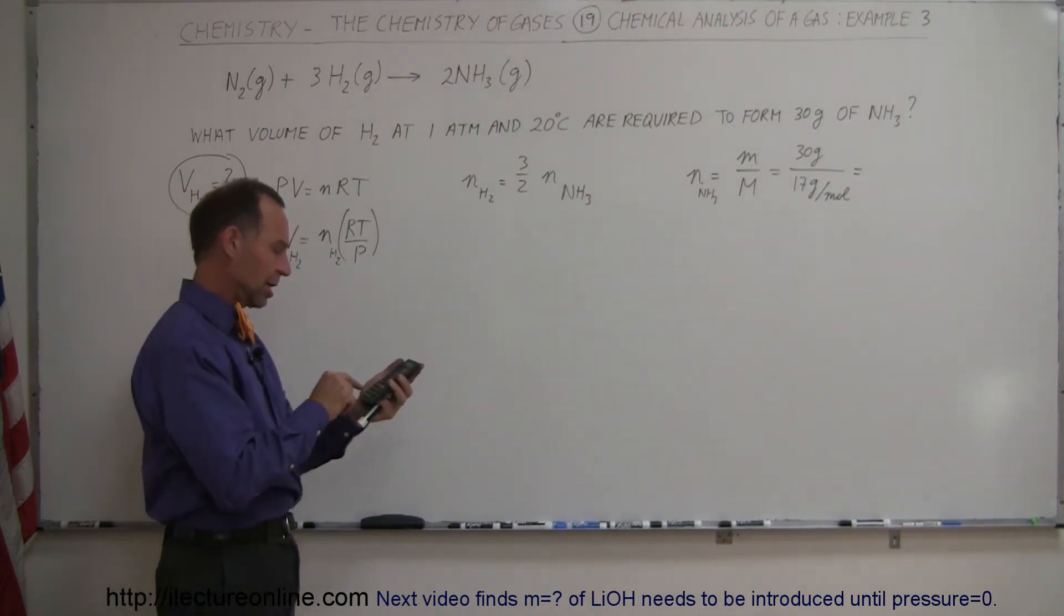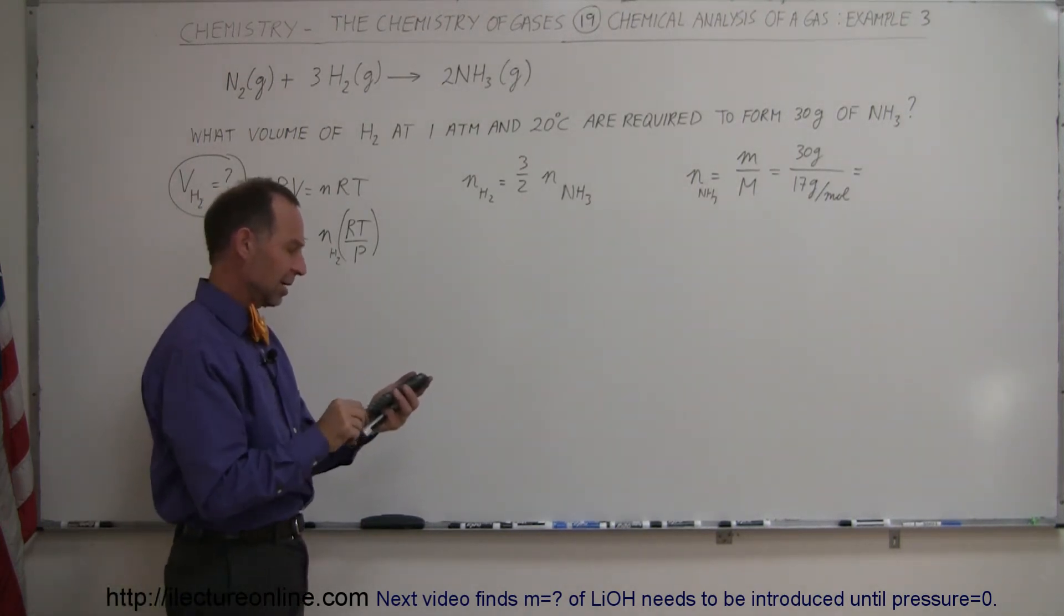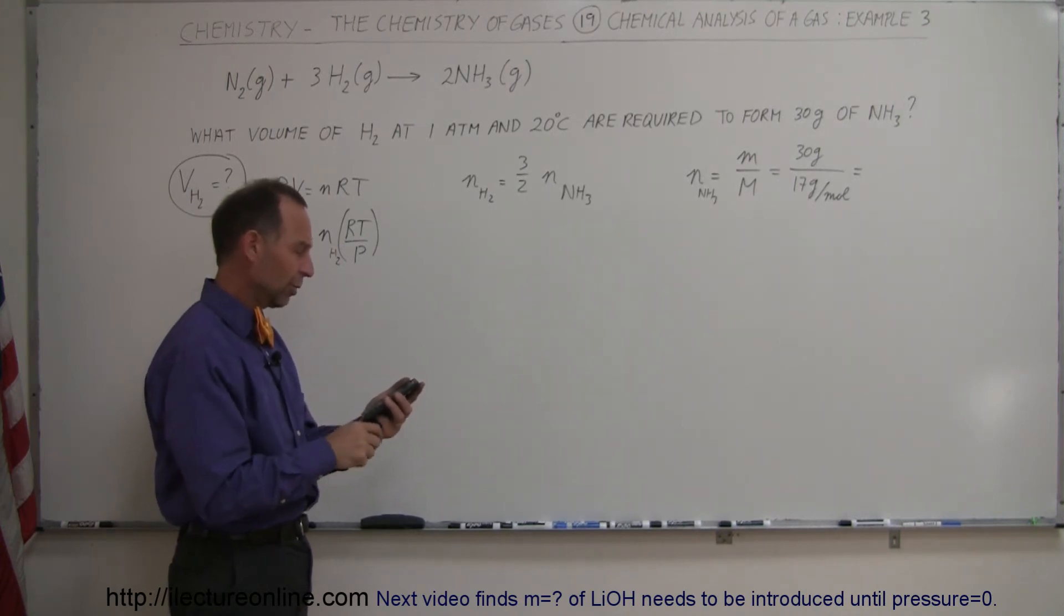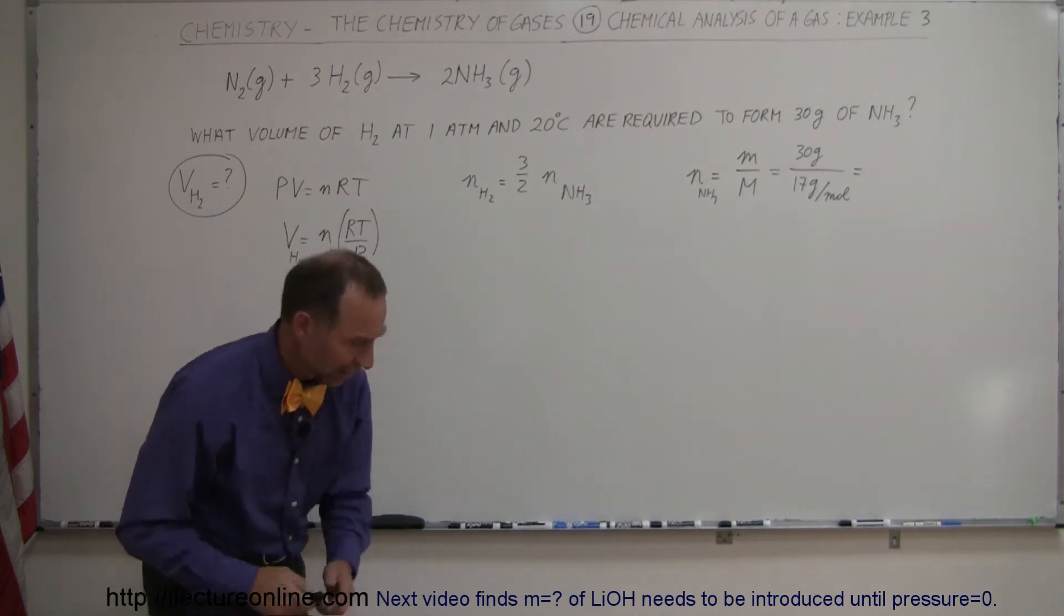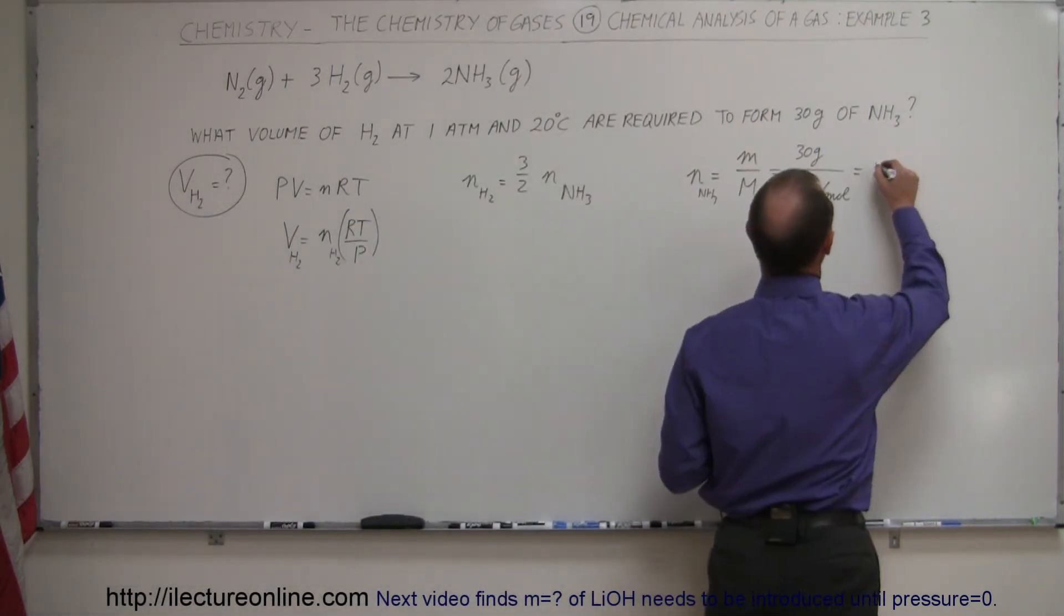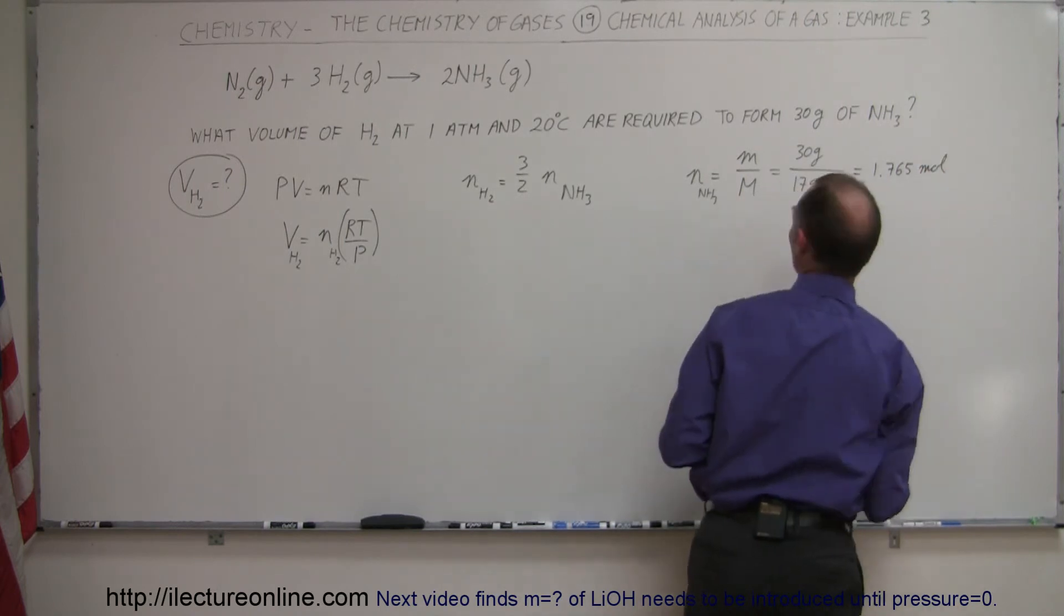So we have 30 divided by 17. Let's try again. 30 divided by 17 equals 1.765. So that would be 1.765 moles of ammonia produced.